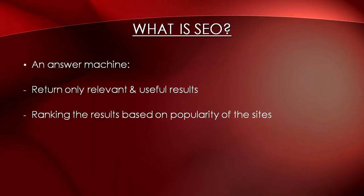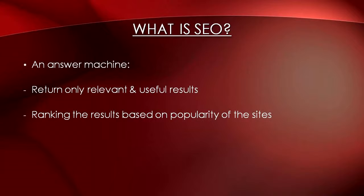So how does SEO work? Search engines are answer machines. When a person searches on the internet, the search engine goes through billions of documents in its database and performs two things. Firstly, it returns results that are only relevant or useful to what the person searched for. This means that SEO will determine the relevance and popularity of your website.